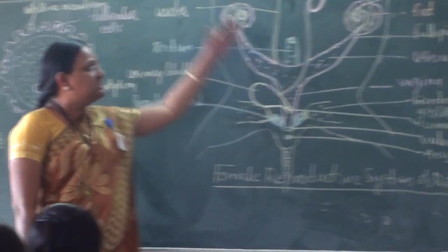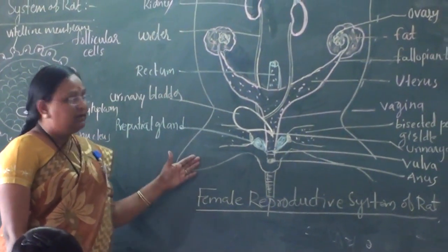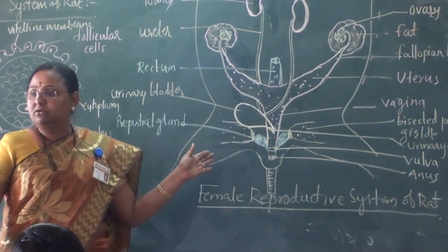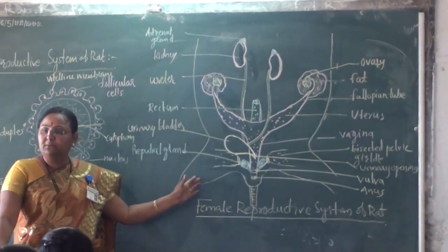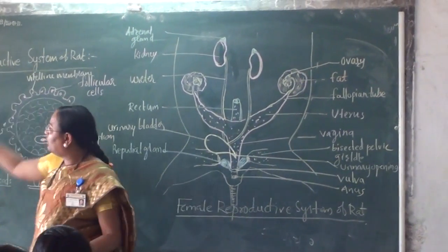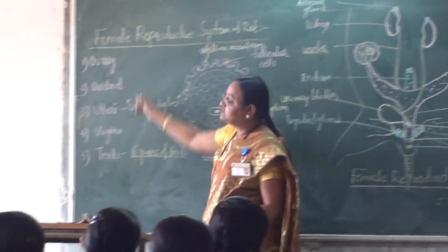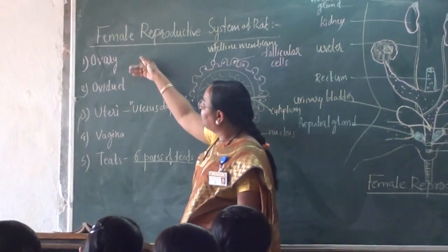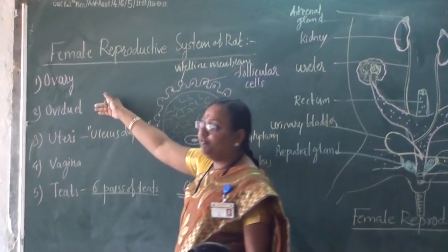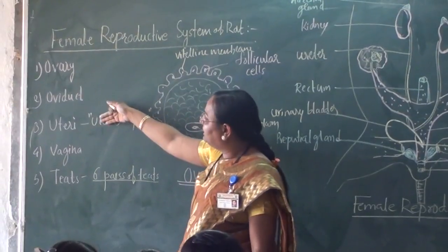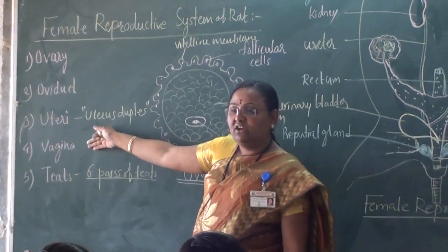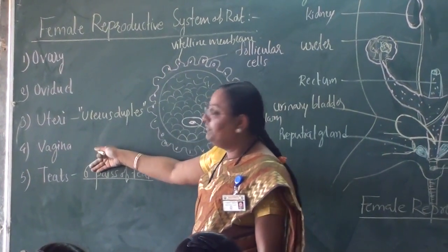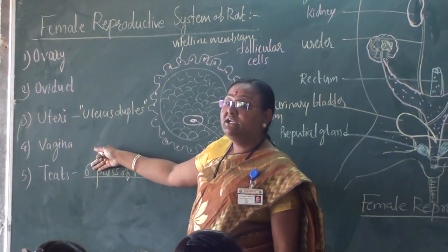This is a sketch or diagram of the female reproductive system showing the following parts: the first one is the ovary, the second is the oviduct, the third is the oviduct, and the fourth is the uterus.